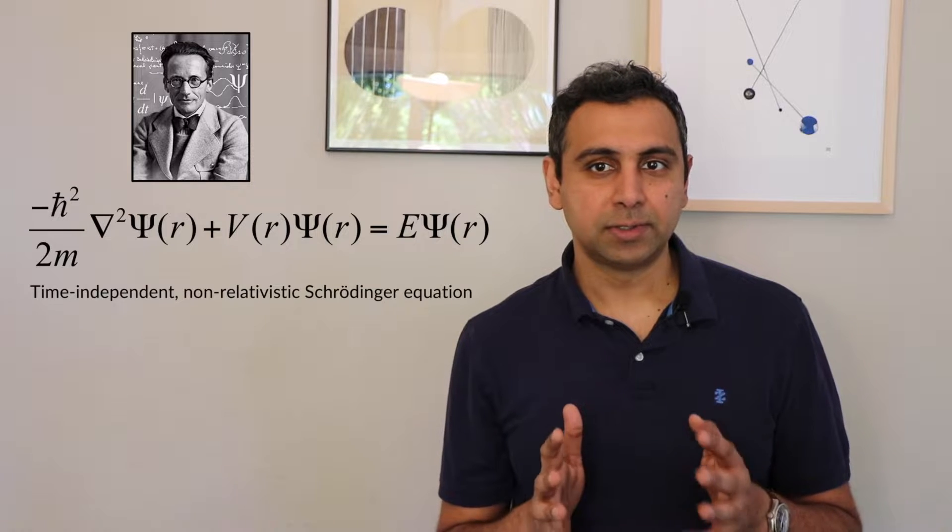The Schrödinger equation is used largely to describe the electron behavior within a material. The electron behavior is really the key because that determines properties like bonding, interaction with electromagnetic waves like light, transfer of heat, magnetism, and pretty much all the things that we care about.